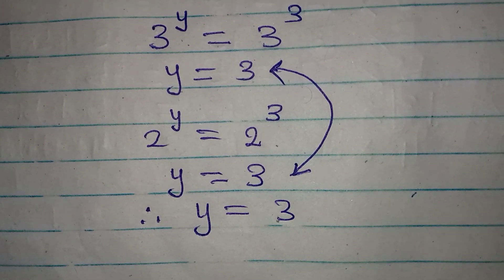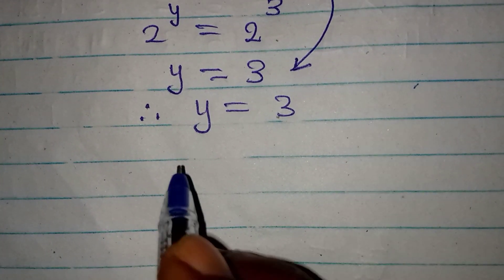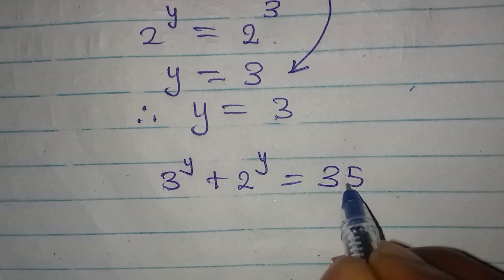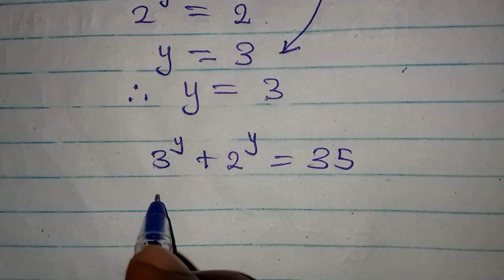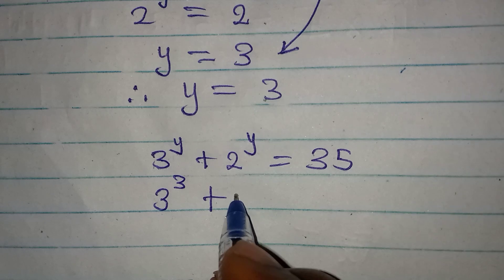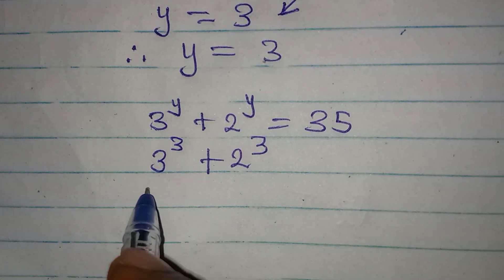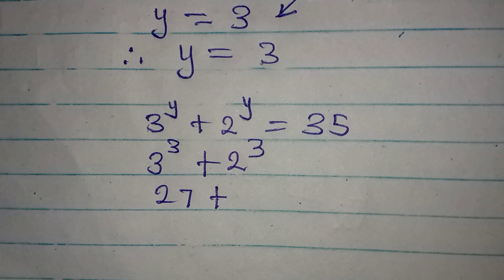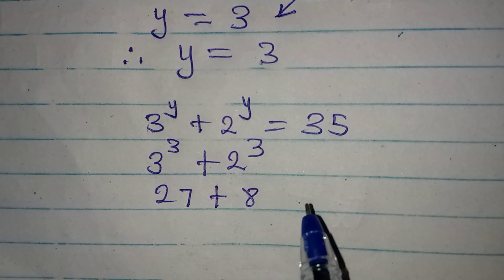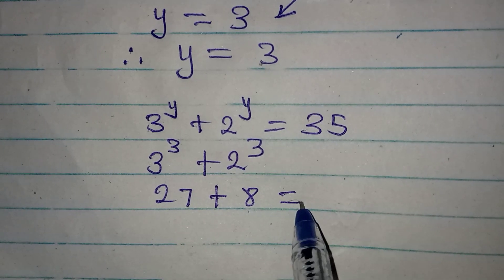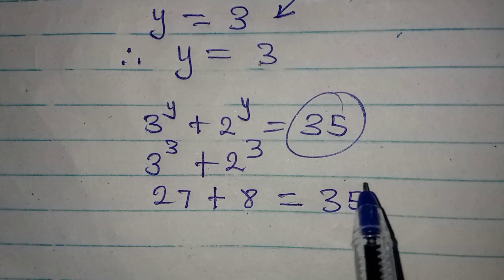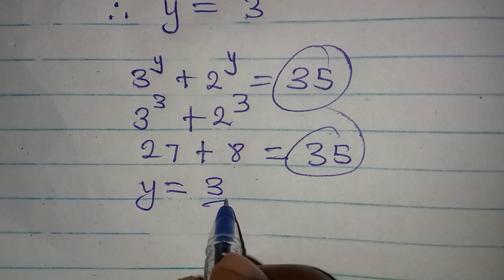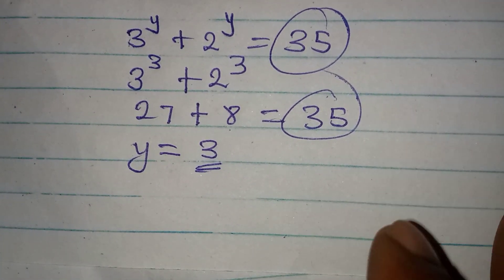Let's go back to the original equation to verify: 3^y + 2^y = 35. Substituting y = 3, we get 3^3 + 2^3. Now 3^3 is 27, and 2^3 is 8 — because it is 2 times 2 times 2, which gives us 8. Putting these together: 27 + 8 = 35, which matches the right-hand side. This confirms that y is truly equal to 3.